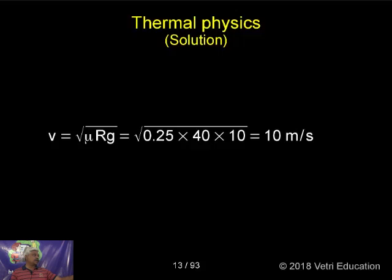So mu constant value given, root of 0.25 into 40 by 10. That is 10 we have to multiply. That's all.